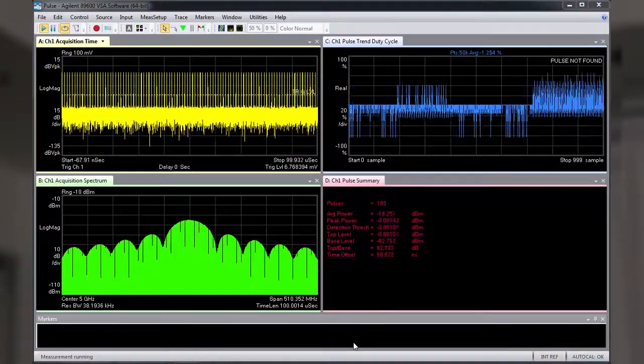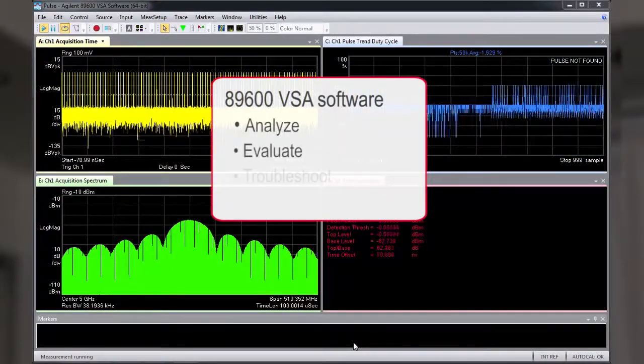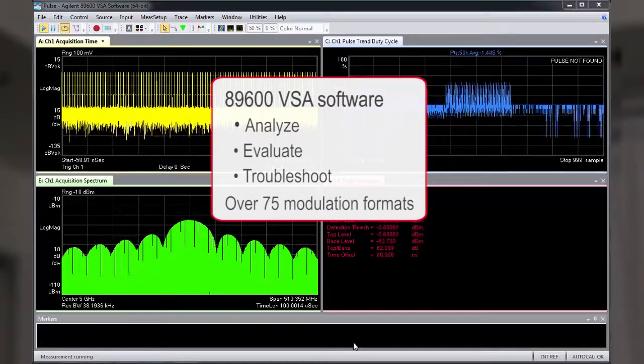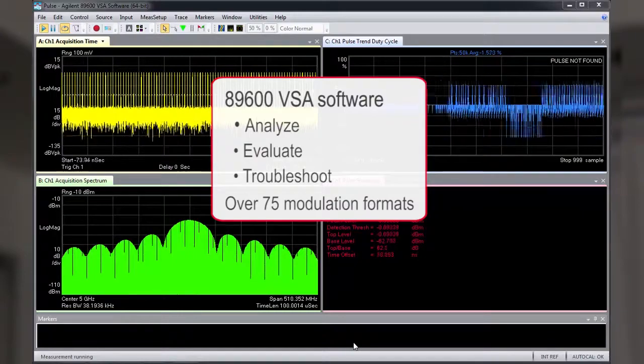The 89600 VSA software provides engineers the tools to analyze, evaluate, and troubleshoot over 75 different modulation formats, including pulse measurement analysis.